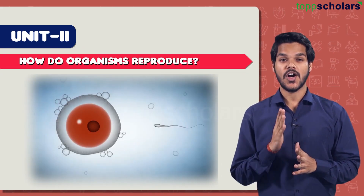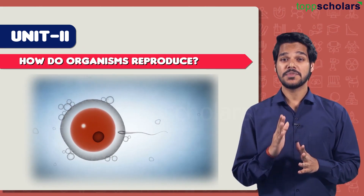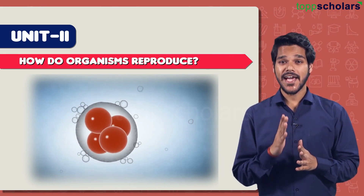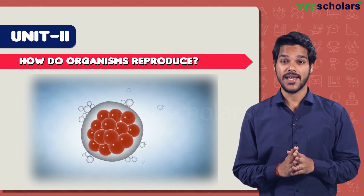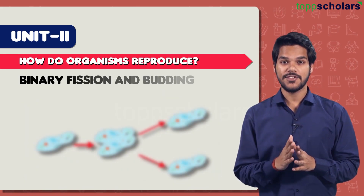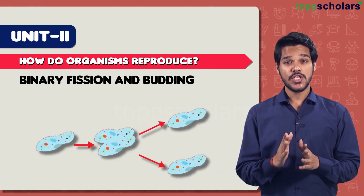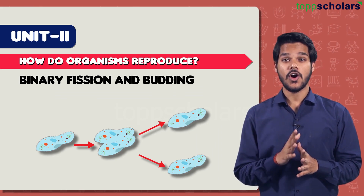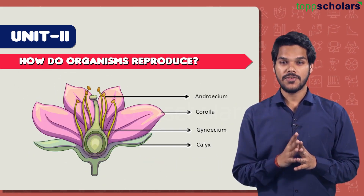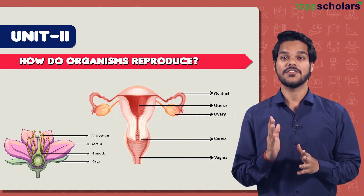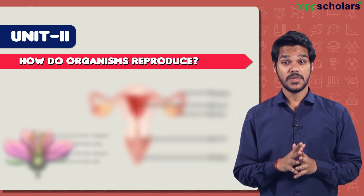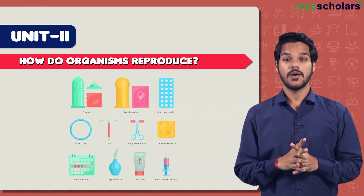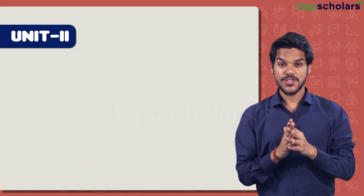The next chapter is How Do Organisms Reproduce? From this chapter you can expect experimental and diagram-based questions on concepts like binary fission and budding. You can also expect diagram and function-based questions on topics like parts of a flower and the female reproductive system. Make sure you don't forget to study concepts like methods of birth control.